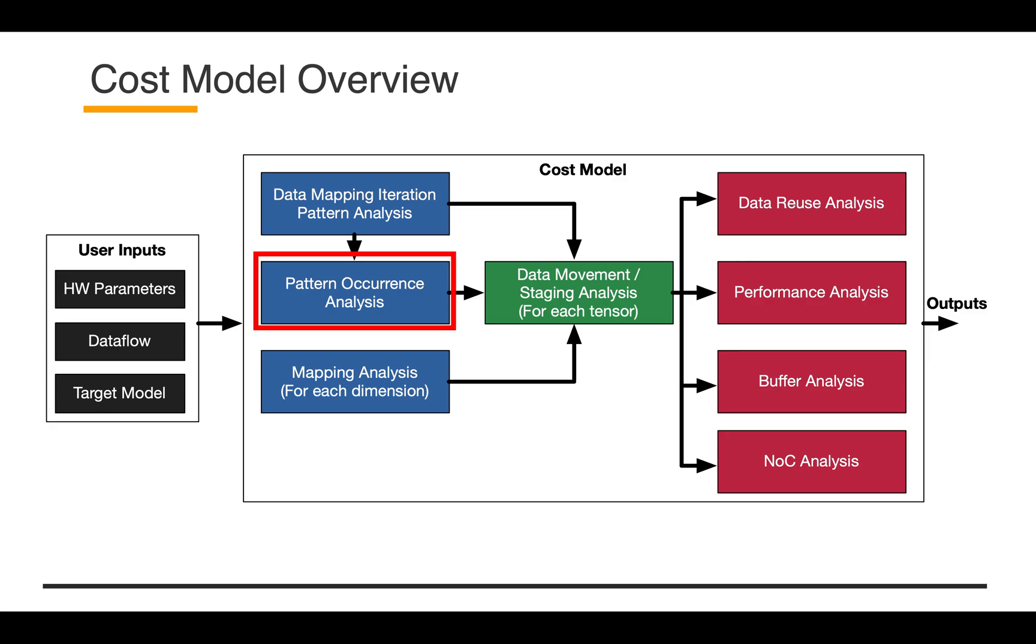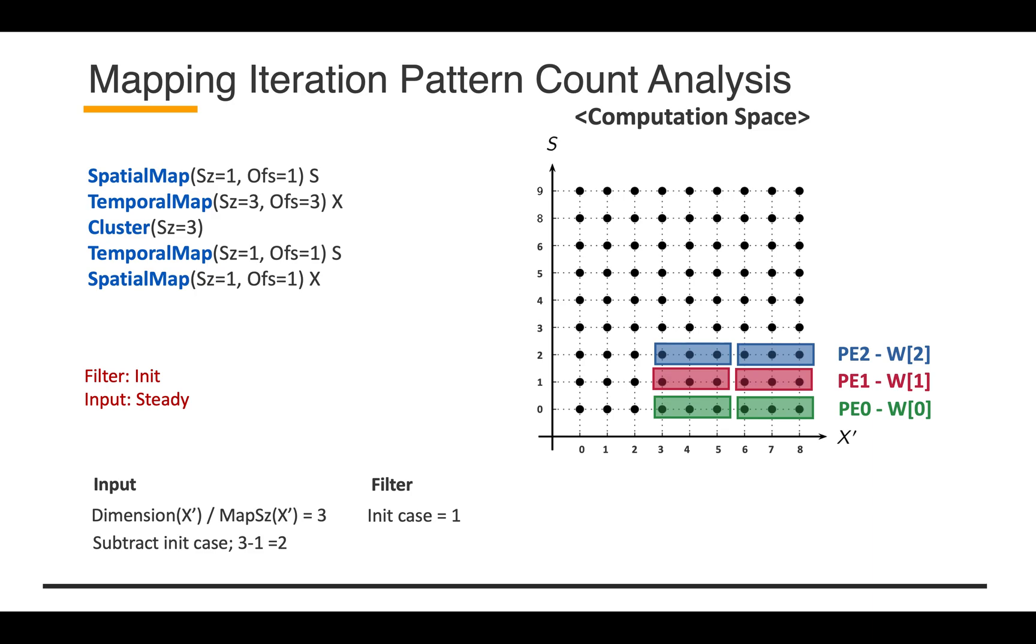Let's move on to the next analysis engine: pattern occurrence analysis. This is the same example. I highlighted the initial position for filter and steady position for input and output. We can immediately know this status occurs twice. But how do we compute that? We can easily compute that using the layer dimension, mapping size, and offset.